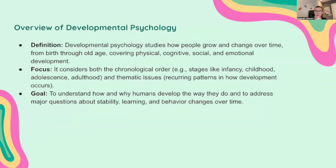Let's start with the overview of developmental psychology. Developmental psychology studies how people grow and change over time from birth through old age, and it covers physical, cognitive, social, and emotional development. It considers both the chronological order — infancy, childhood, adolescence, adulthood — and thematic issues, which are those reoccurring patterns in how we develop. Our goal is to understand how and why humans develop and to address major questions about stability, learning, and behavior that changes over time.